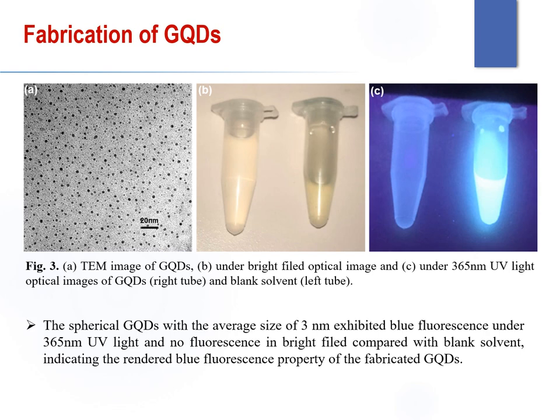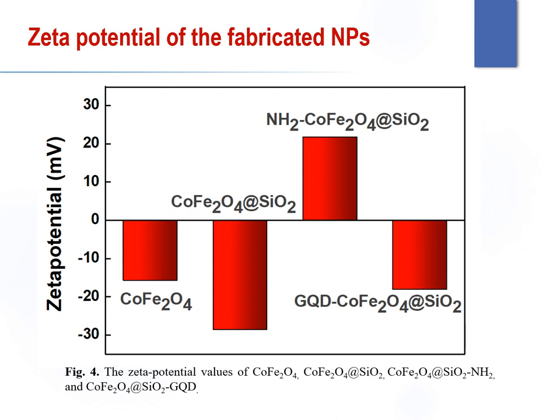The spherical GQDs with an average size of 3 nanometers showed blue fluorescence under 365 nm UV light, and no fluorescence in bright field compared with the blank solvent, as presented in Figures 3B and 3C, indicating the blue fluorescence property of the fabricated GQDs. The zeta potential values confirmed the fabrication process of the nanoparticles.